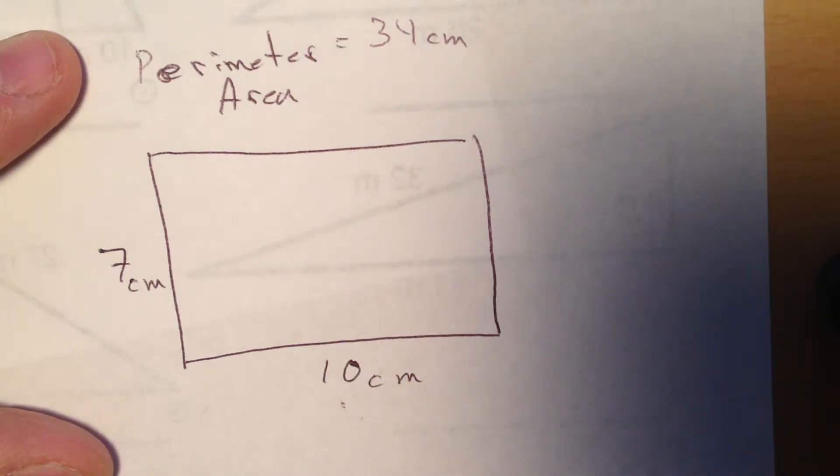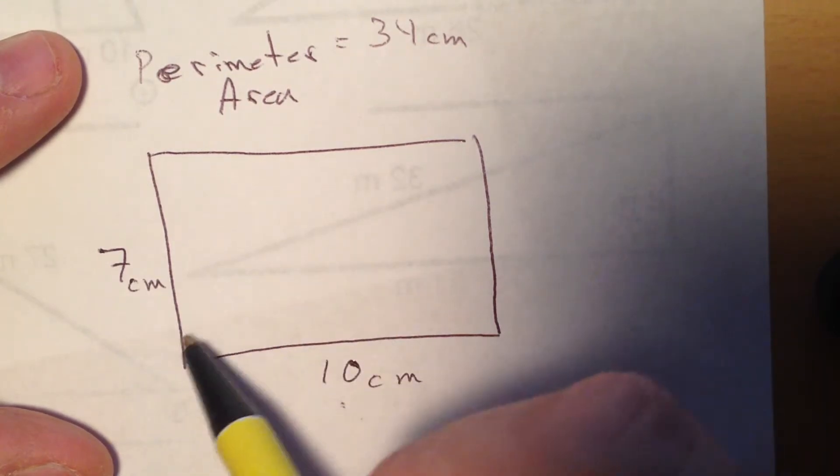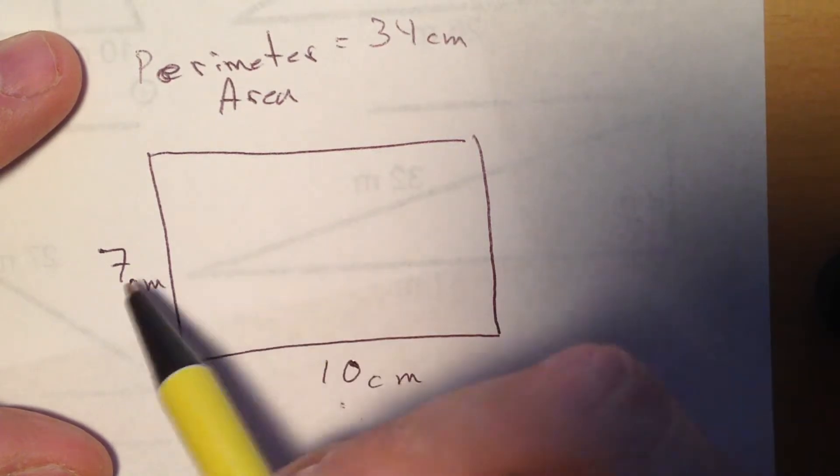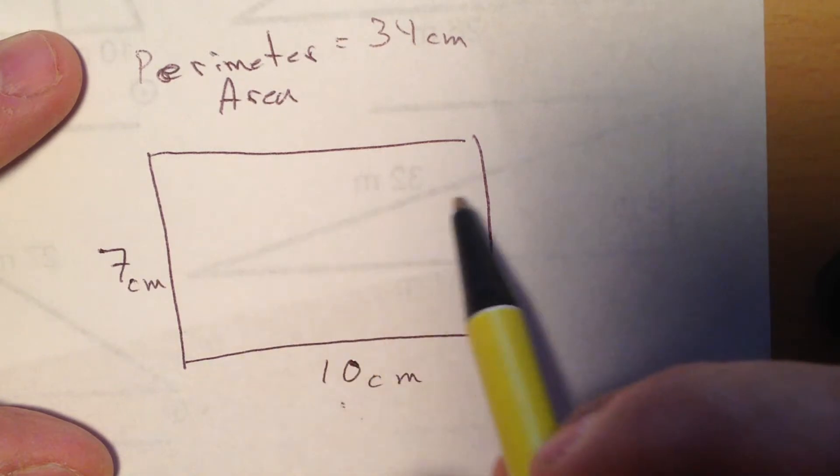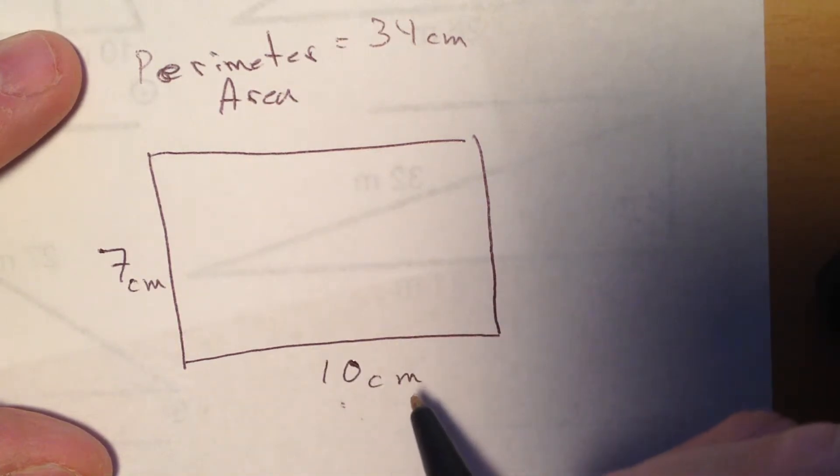Now the area is a bit different. The area we're looking for is how many square units are in the inside—how many square centimeters. So if I were to draw lines across one centimeter apart and lines down one centimeter apart, I'm counting up how many squares there would be inside. You can do that, draw them all out, and that will take you a long time.